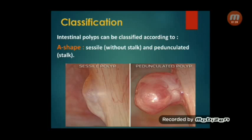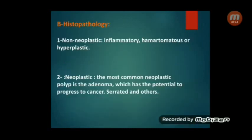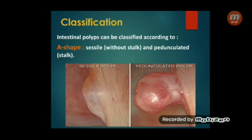Now, the classifications. Intestinal polyps can be classified according to shape and histopathology. By shape: sessile and pedunculated. The picture on the left shows a sessile polyp, meaning it is attached firmly to the colon wall by its base with no stalk. In contrast, a pedunculated polyp is attached to the colon wall by a stalk, and is therefore able to swing freely and can have pores in its surface.